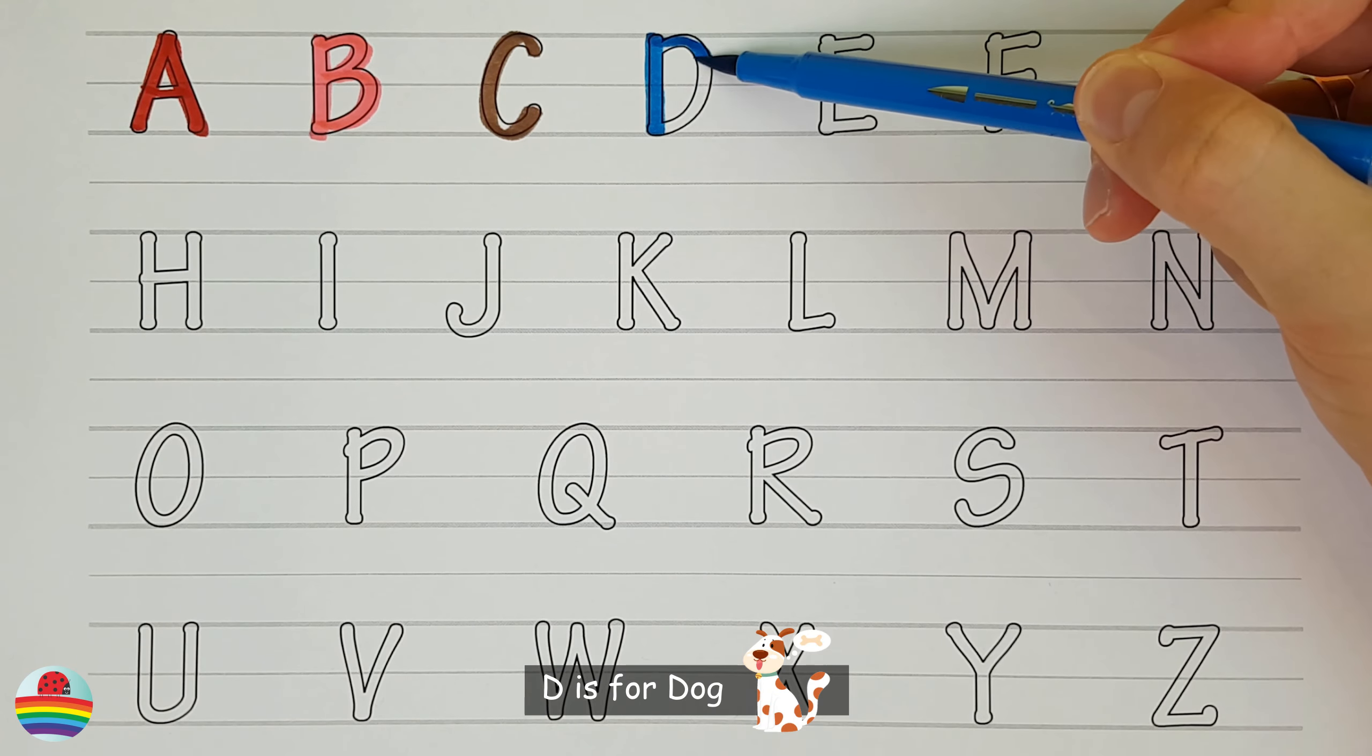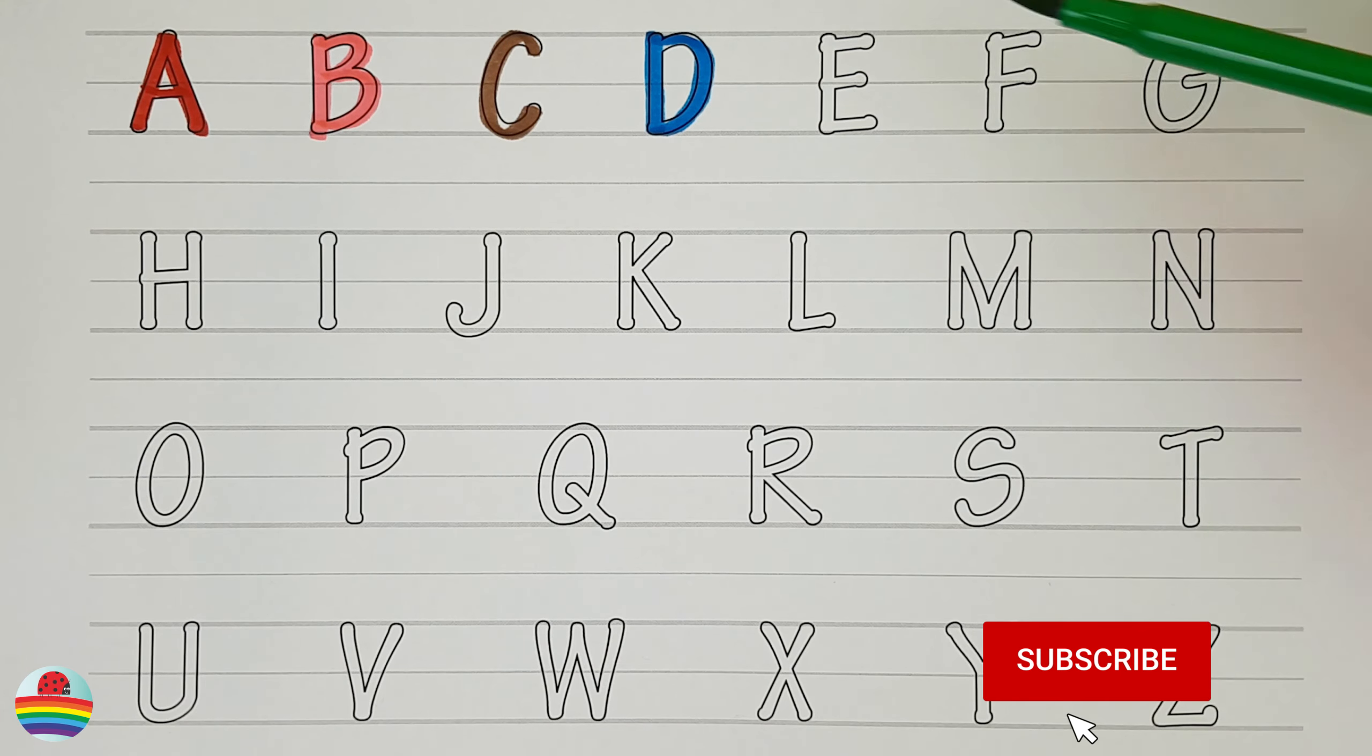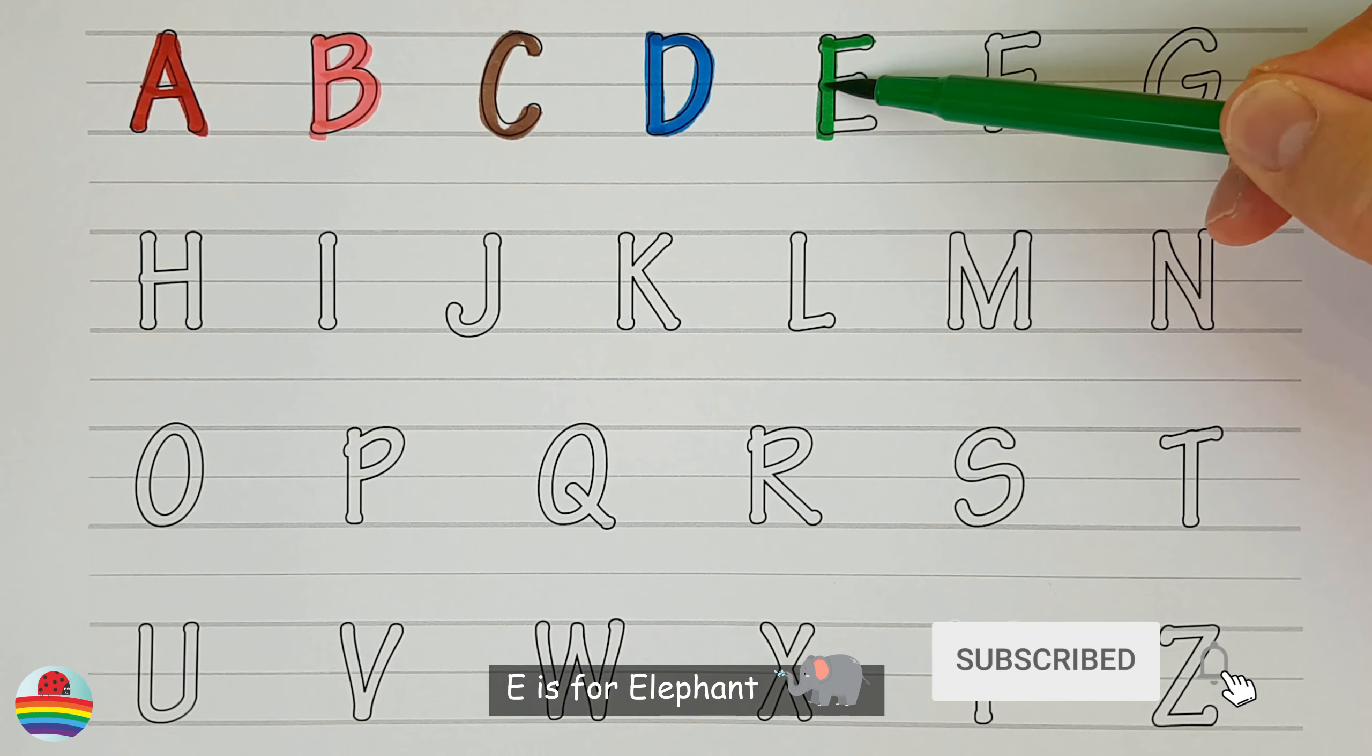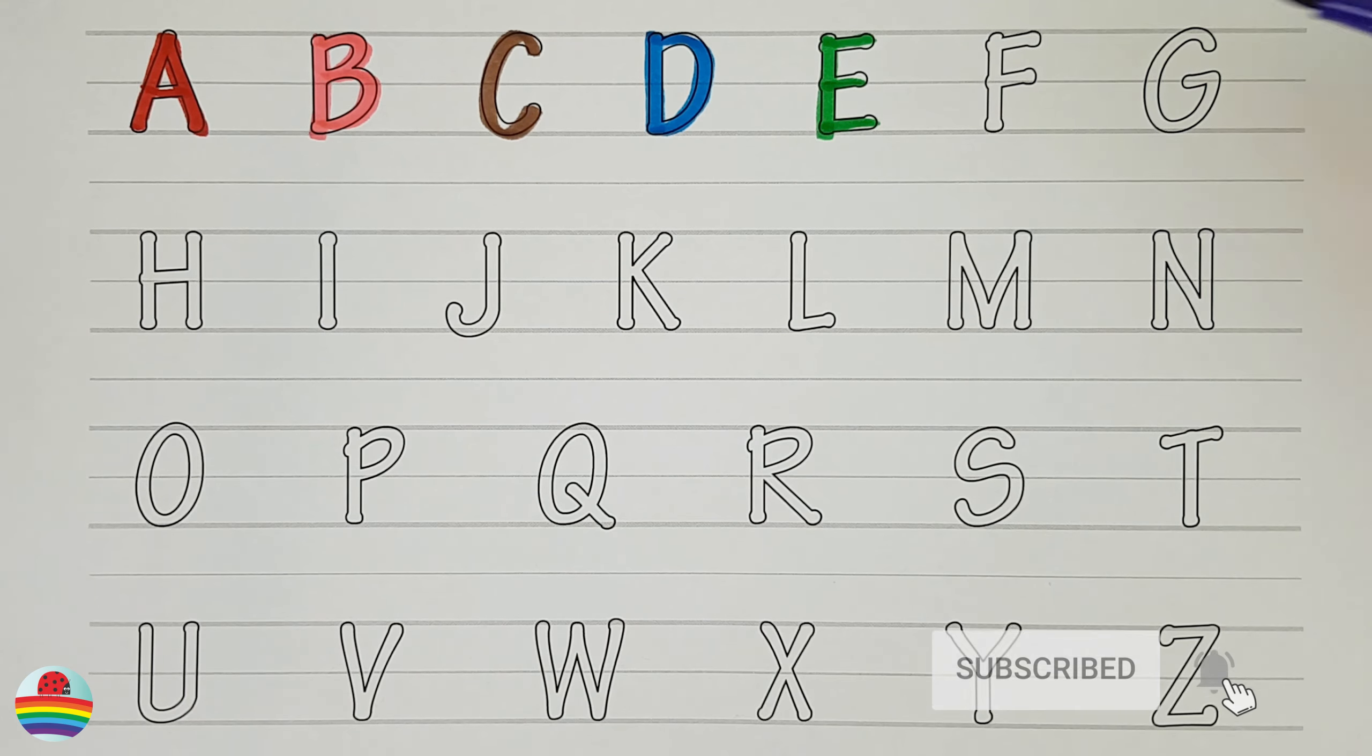D. D is for dog. D. E. E is for elephant. E. F. F is for fox. F.